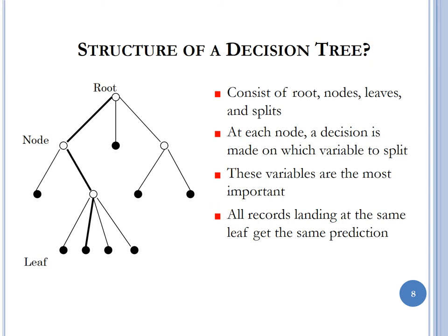The structure of a decision tree consists of a root at the very head of the tree, nodes where we branch off to make decisions, leaves in black at the very bottom, and splits where the decision takes place. At each node, a decision is made about which variable to split on and how to split it — these are the most important variables. All records landing at the same leaf get the same prediction.